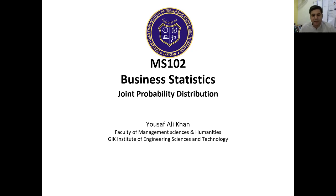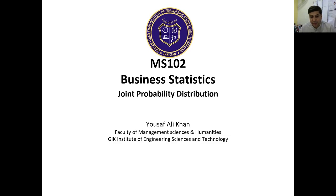Today's lecture topic is joint probability distribution. We have already covered discrete and continuous probability distributions, including Poisson distribution, binomial distribution, negative binomial distribution, hypergeometric distribution, uniform distribution, and normal distribution. You already know how and where to use these distributions. Now, in order to further extend the concept of probability distribution, I am going to start joint probability distribution.